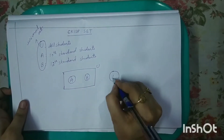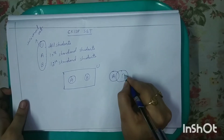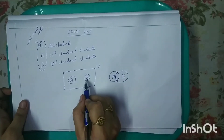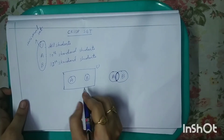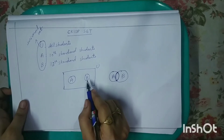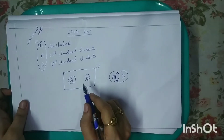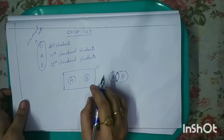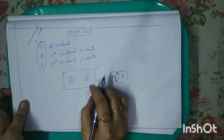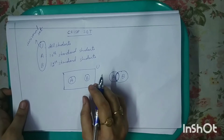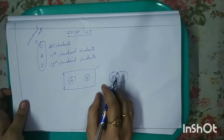Intersection means if this is set A and this is set B, there will be something in common between these two. But here there is nothing common, so therefore A and B are disjoint sets. Disjoint set means there is nothing common between the two sets. From this we can understand that one student can either belong to class 10 or class 12 and not both — a student can't study 10th and 12th standard at the same time.